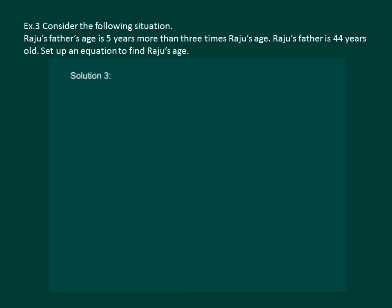Consider the following situation. Raju's father's age is 5 years more than 3 times Raju's age. Raju's father is 44 years old. Set up an equation to find Raju's age.